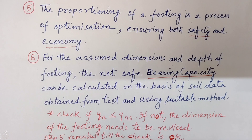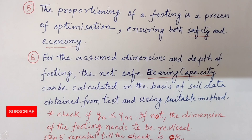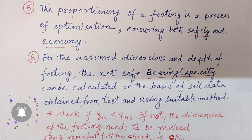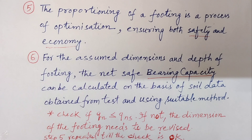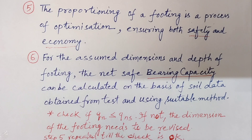The suitable plan dimensions — namely the width of a square or strip footing, and the width and length if the choice is a rectangular footing — have to be assumed to begin with. For this assumed plan area, the net ultimate load intensity Qn is equal to the design load divided by the plan area. Qn should not be allowed to exceed the net allowable bearing pressure; if it does, the design is unsafe.